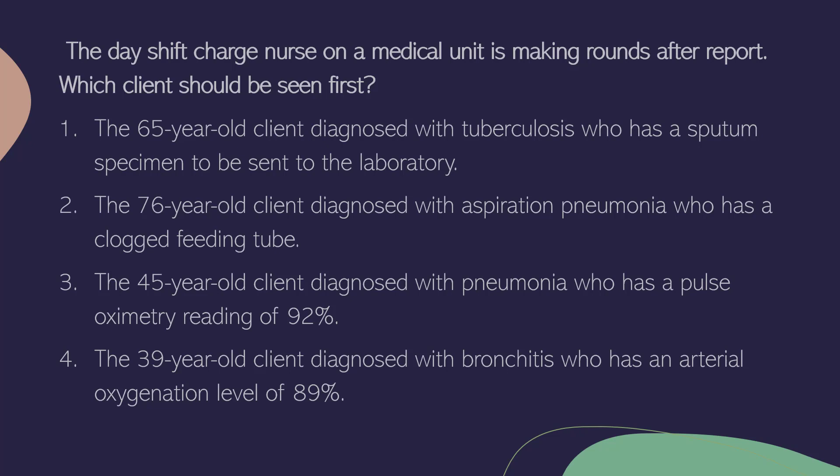1. The 65-year-old with tuberculosis awaiting a sputum specimen — not the correct answer. The specimen needs to be taken to the laboratory within a reasonable time frame, but a UAP can transport it. 2. The 76-year-old with aspiration pneumonia and a clogged feeding tube — not the correct answer. Clogged feeding tubes occur with some regularity; a delay in feeding will not result in permanent damage. 3. The 45-year-old with pneumonia and a pulse oximetry reading of 92 — this is the correct answer. A pulse oximetry reading of 92 means arterial blood saturation is somewhere around 60 to 70%. 4. The 39-year-old with bronchitis and an arterial oxygen level of 89 — not the correct answer. Arterial oxygenation normal values are 80% to 100%. Number 3 is our correct answer and the client who should be seen first.